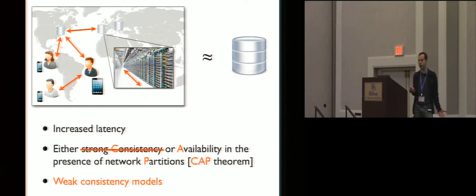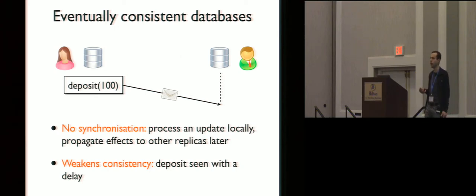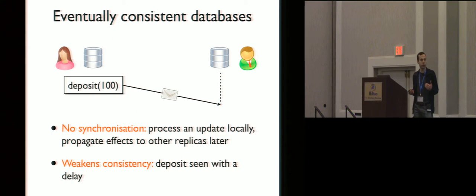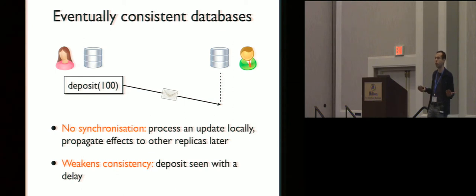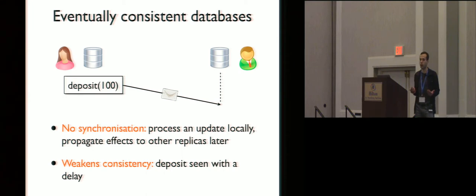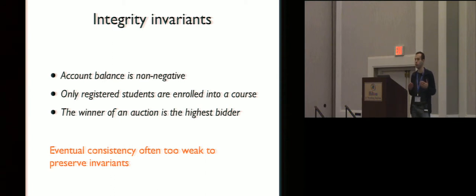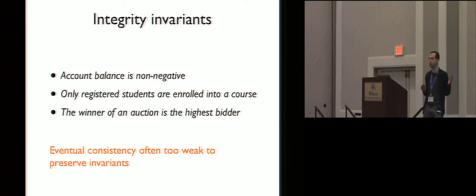One particularly extreme kind of weak consistency model is called eventual consistency. This gets rid of synchronization altogether. If a user issues a request at a replica — say, to deposit $100 into a bank account — then this request is processed at this replica immediately, and its effects are propagated to other replicas only later in the background. A user sitting at a different replica will see this deposit with a delay, but such anomalies are often acceptable. However, some applications have more complex correctness requirements — integrity invariants like: account balance is always non-negative, only registered students are enrolled in a course, the winner of an auction is the highest bidder. Eventual consistency is often too weak to preserve these kinds of invariants.